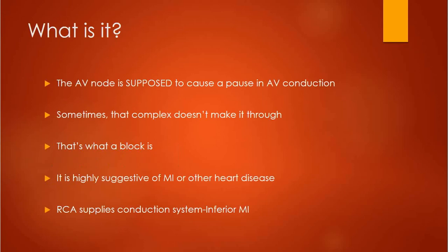What is it? The AV node is supposed to cause a pause in conduction. It's supposed to give the atria adequate time to fill the ventricles, but whenever that complex doesn't make it through, or it takes too long to make it through, what we end up with is a block — and that's all that a block, or an AV block, really is.